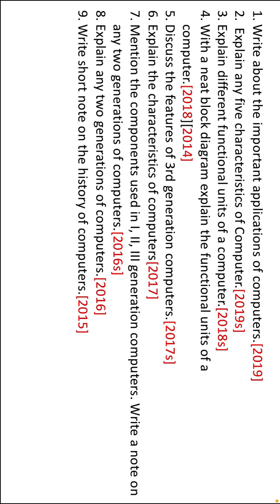For the five-mark questions, you need to remember the characteristics, all five generations, the block diagram, and the different types of computers — microcomputers, minicomputers, mainframe computers, and supercomputers — as they can also be asked for five marks. If you study all four to five of these topics in the first chapter, you will get the complete five marks. Whatever you study about generations is also useful for the two-mark questions, so it helps for both.